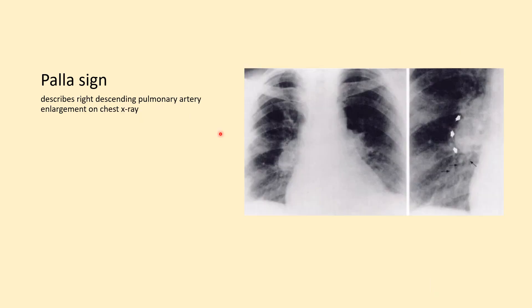The Pallas sign is similar to the Fleischner sign. It is sausage-shaped and represents enlargement of the right descending pulmonary artery.